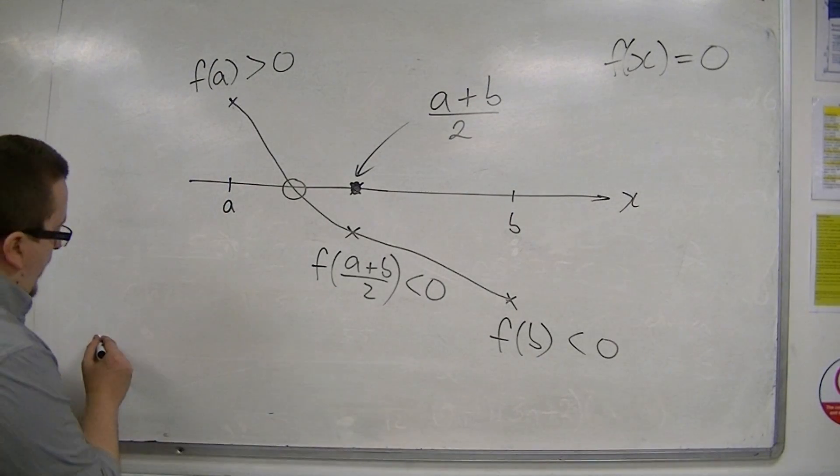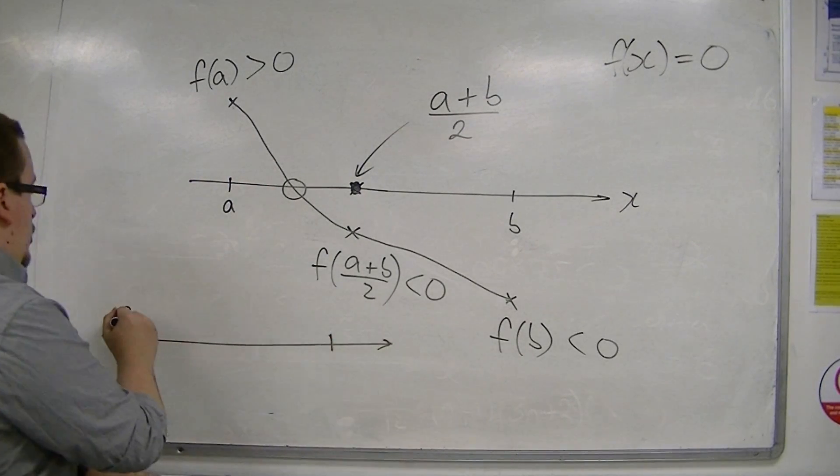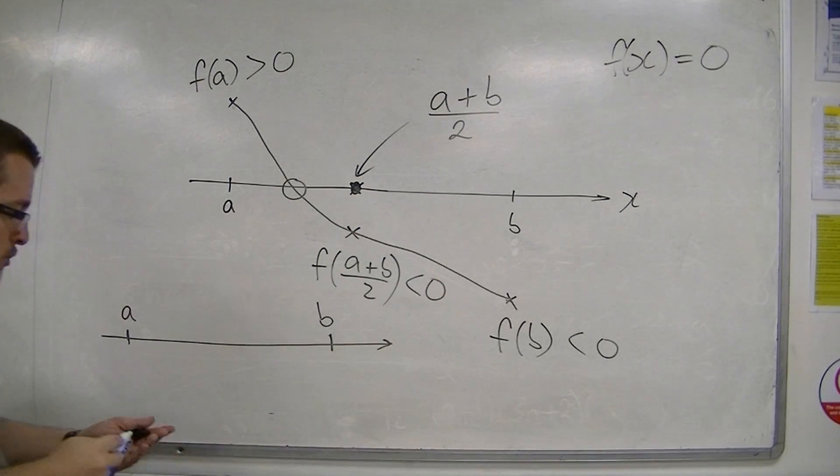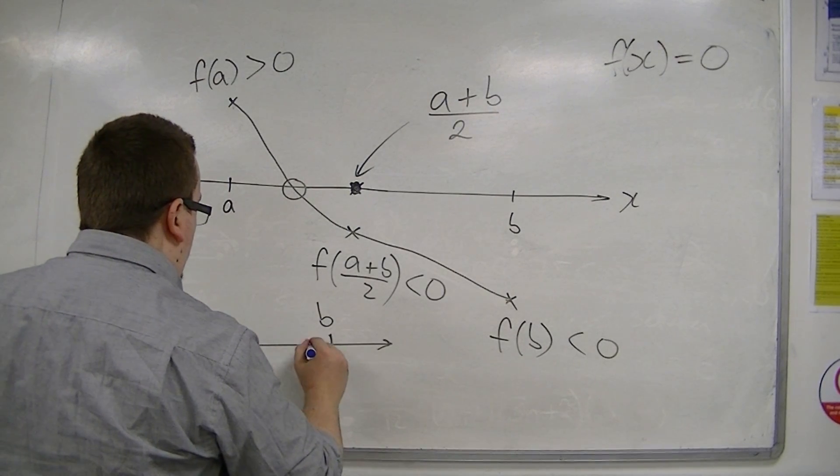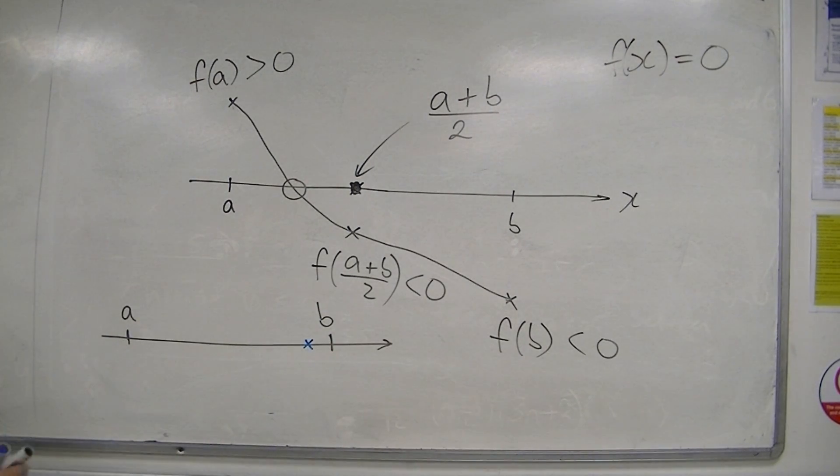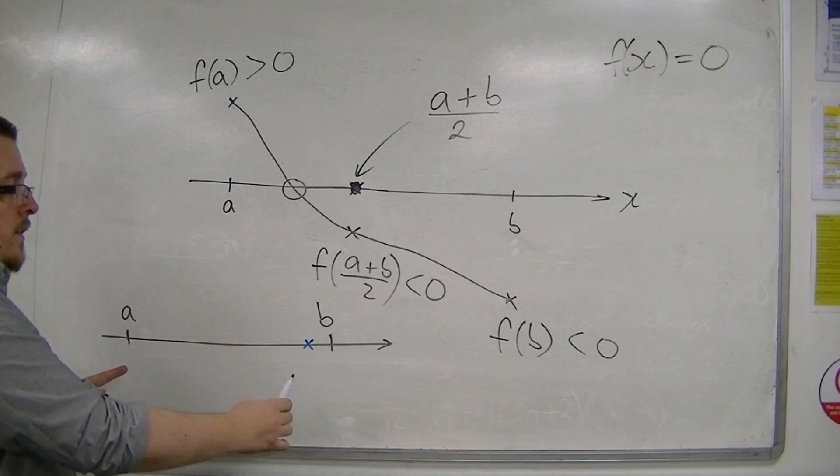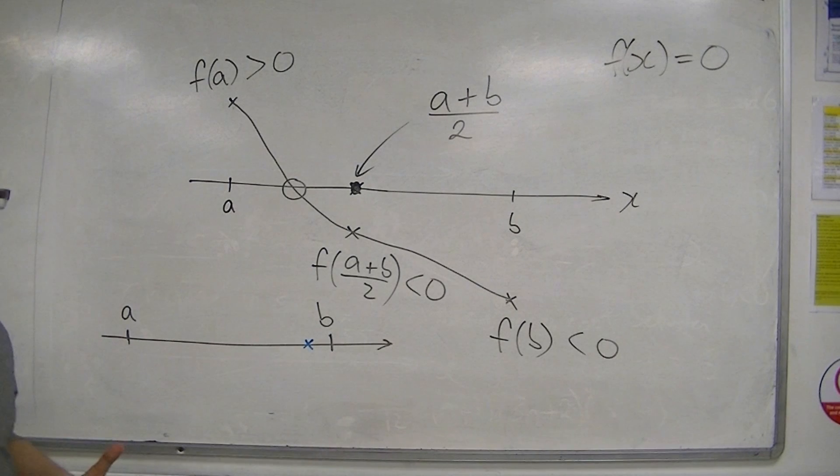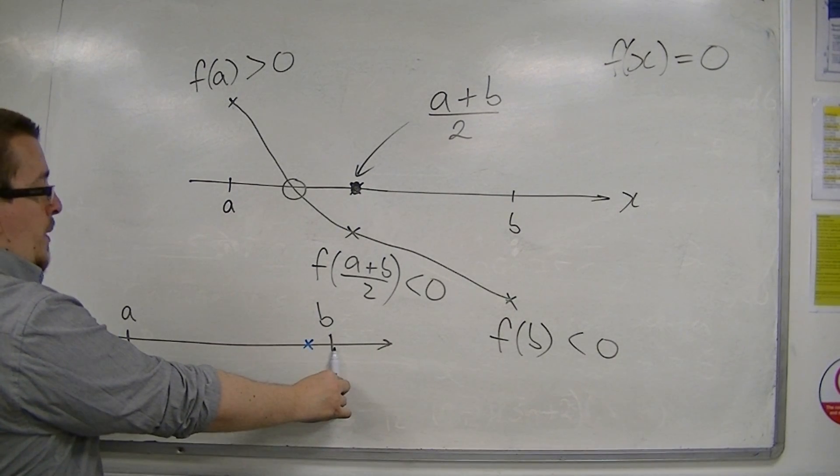So, let's say, for example, this is my x-axis, and these are the two initial numbers that I'm looking at, and the actual answer is here. That's the actual root. So, substituting in a and b, I know with a change of sign that the answer must lie between a and b.